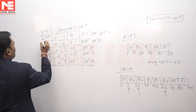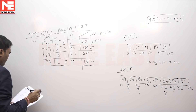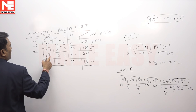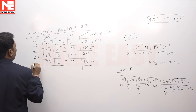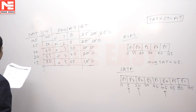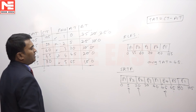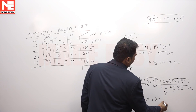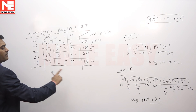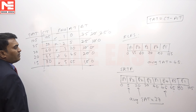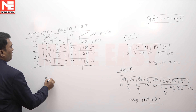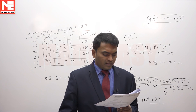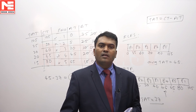Turnaround times for SRTF: P1 = 105 minus 0 = 105, P2 = 30 minus 5 = 25, P3 = 40 minus 20 = 20, P4 = 65 minus 45 = 20, P5 = 80 minus 65 = 15. Add all and divide by 5 — the average turnaround time for SRTF is 37. The question asks for the difference between average turnaround times of FCFS and SRTF: 45 minus 37 equals 8. So the answer is 8.